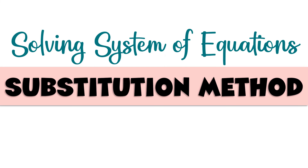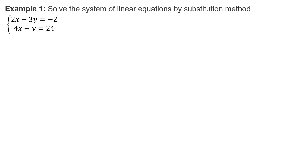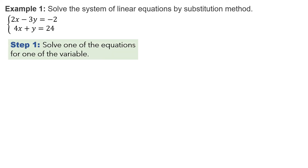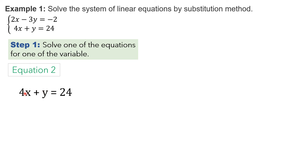Solving system of equations using substitution method. To solve this system of linear equations by substitution method, the first step is to solve one of the equations for one of the variables. You may decide if you want to solve for x or y, or whether to use the first or second equation. I want to use the second equation because there is a variable in it with no numerical coefficient — the variable y. Therefore, I can easily solve for y by just transposing positive 4x to the other side, where it will become negative 4x. So, we have solved for y already.